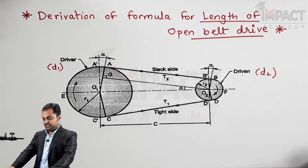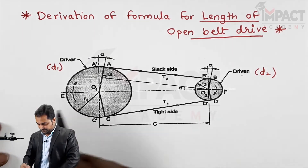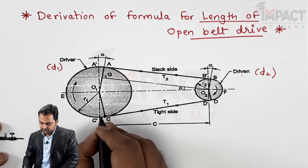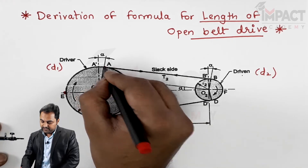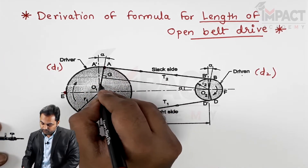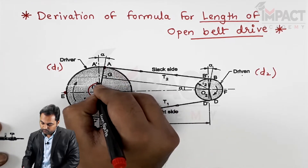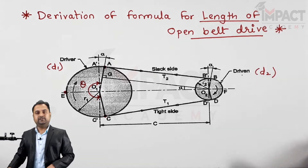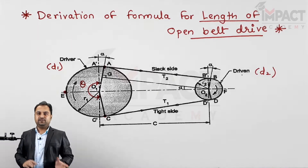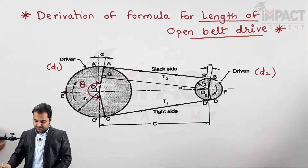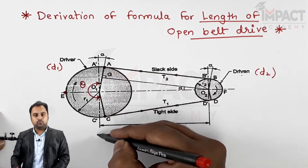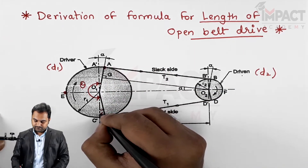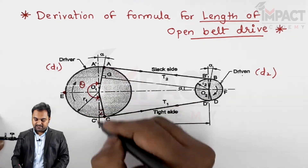There are some points to be noted here. In the case of the larger pulley, the angle of contact of the belt starts from point C, up to E, and up to A. This angle of contact is more than 180 degrees and is denoted as theta. This straight vertical line indicates 180 degrees, and there are alpha angles from both sides.